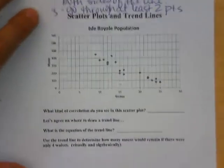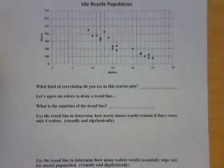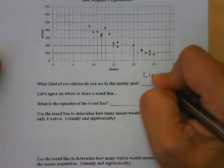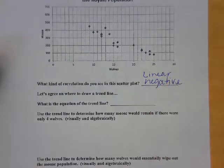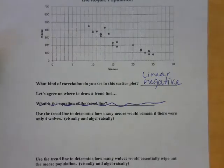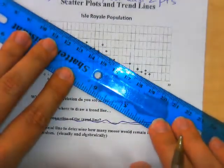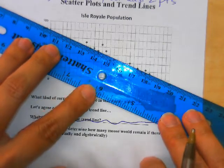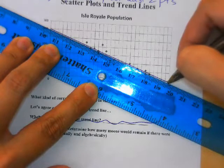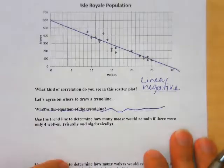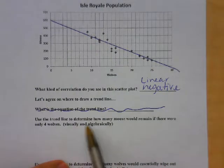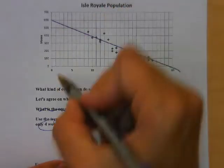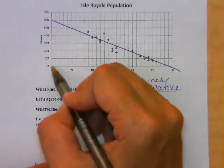Let's look at this next one — this is Isle Royale population, wolves and moose population. What kind of correlation do you see? Let's go ahead and draw our trend line. Everybody's trend line is going to be a little different because we're estimating, so if you don't get the exact same answer, that's okay.